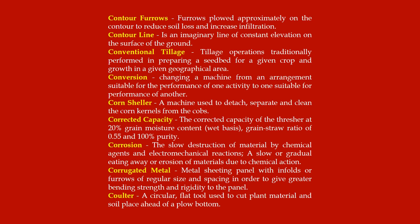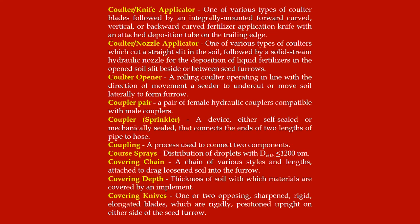Corrosion: the slow destruction of material by chemical agents and electromechanical reactions; a slow or gradual eating away or erosion of materials due to chemical action. Corrugated metal: metal sheeting panel with infolds or furrows of regular size and spacing in order to give greater bending strength and rigidity to the panel. Colter: a circular flat tool used to cut plant material and soil, placed ahead of a plow bottom.